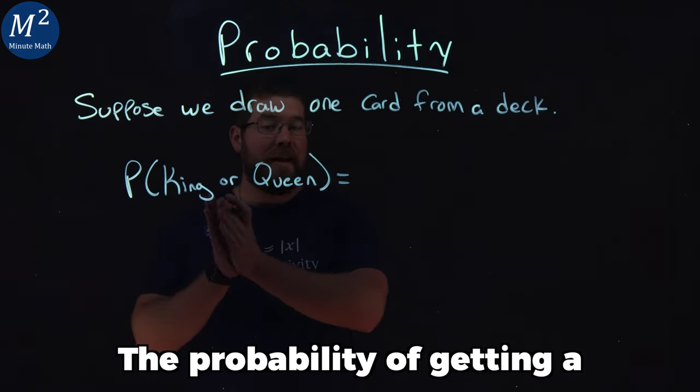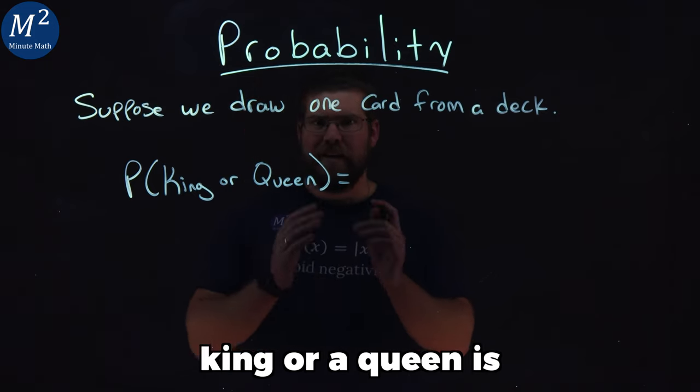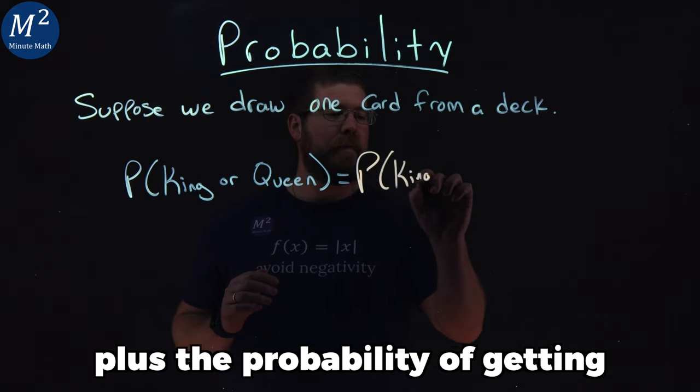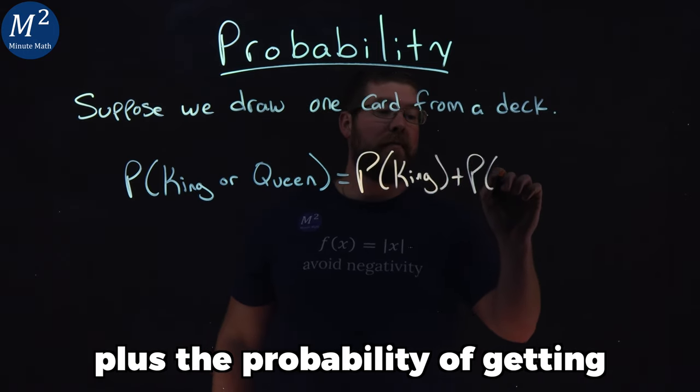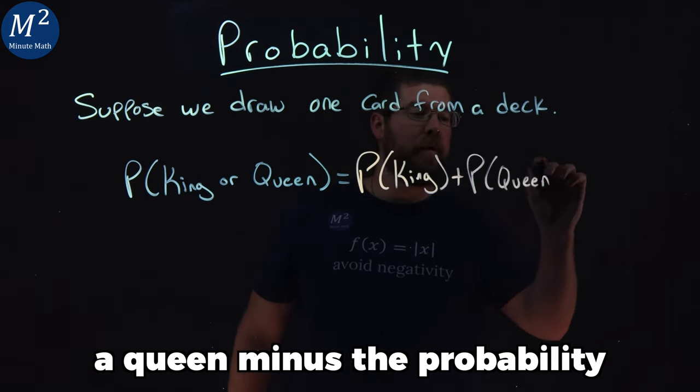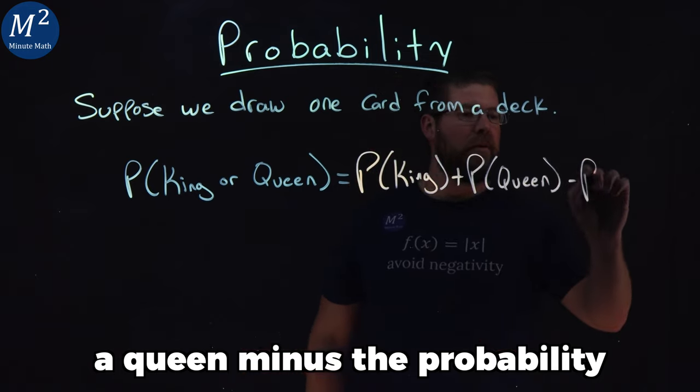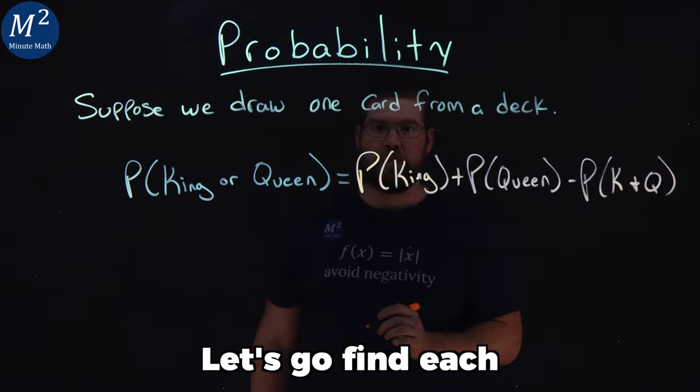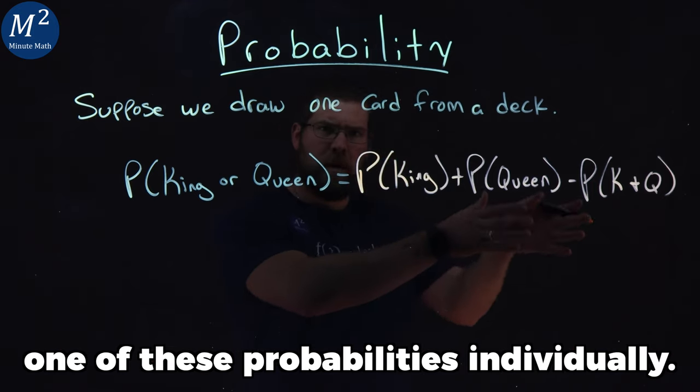The probability of getting a king or a queen is the same thing as the probability of getting a king plus the probability of getting a queen minus the probability of getting a king and a queen. Let's go find each one of these probabilities individually.